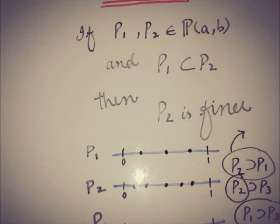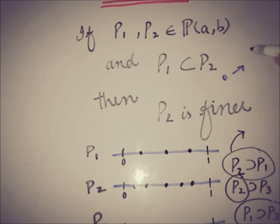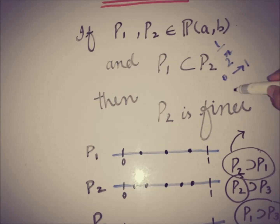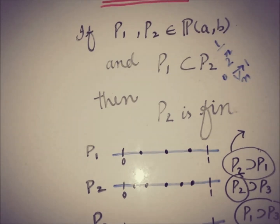You can work on partitions with elements of your choice. Some very common and important partition forms for the interval [0, 1] use the formula 1/(2^n) or 1/n. You can work with these partitions to understand the concept of partition more easily.